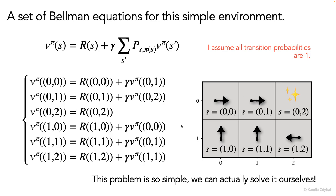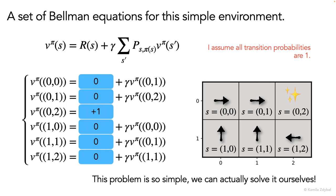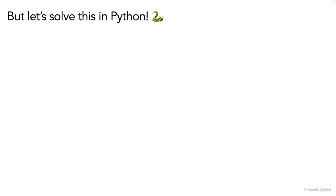Now, this system is so simple that we can actually solve it ourselves. This is the only non-zero reward, and all the other rewards are zero. We can set the discount gamma to be 0.9. So now we know the value of being in state zero comma two is equal to one, we can substitute it, then find the value of state zero one, substitute it, and so on. But let's actually solve this system of equations in Python.